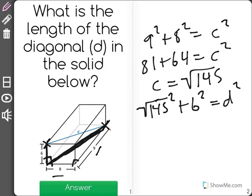So square root of 145 squared is actually just equal to 145, plus 6 squared is 36, will equal d squared.